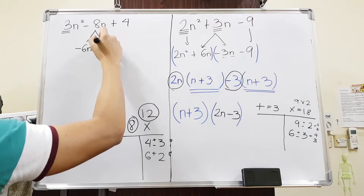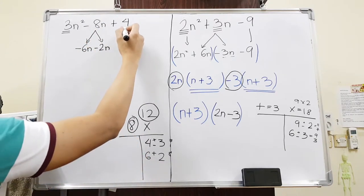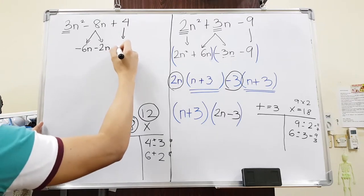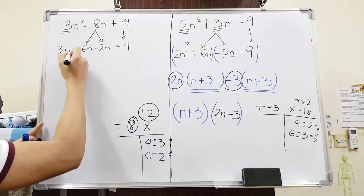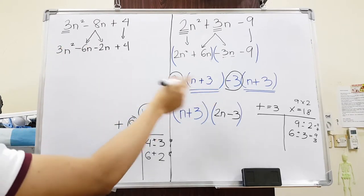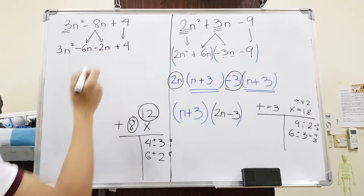Again, we will just split the middle term into two numbers, which are the numbers that we found in here. And then we will just take this down, copy it, because we didn't do anything to this. And then the same thing goes for this. Just like earlier, we don't care whether the 2n comes first or the 6n. You will get the same answer anyways.